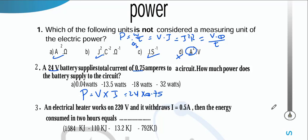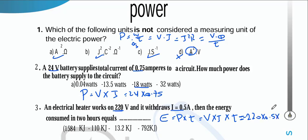An electric heater works on 220 V with current 0.5 A. Energy consumed in 2 hours: E = V·I·t = 220 × 0.5 × 2 × 3600 = 792,000 J = 792 kJ.